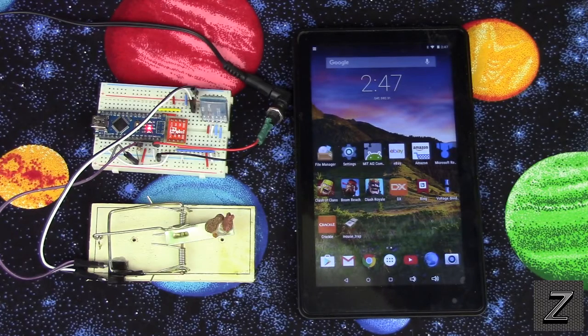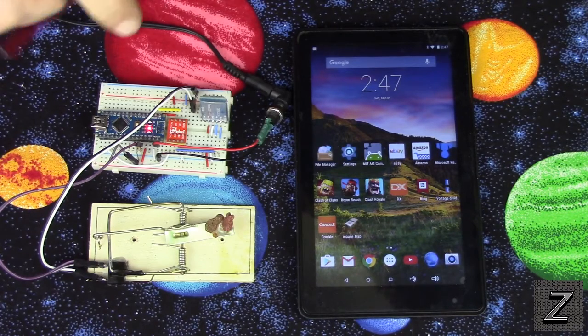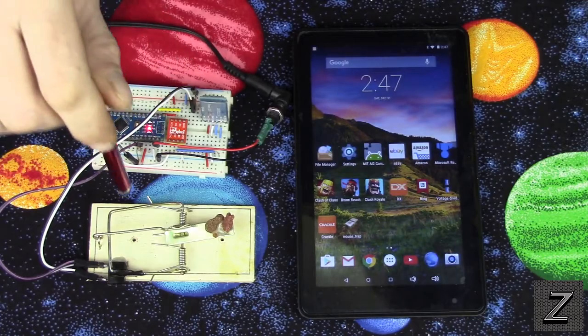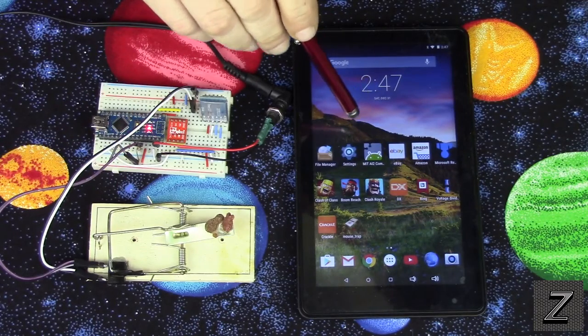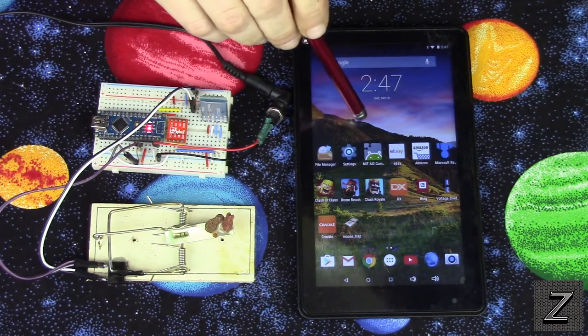Welcome to the Z-Hut. Today, I'd like to show you how you can add this simple circuit to a mouse trap to be able to check if it's been triggered and you got a mouse by using your Android device.